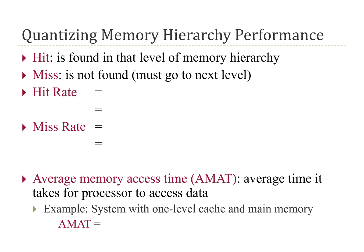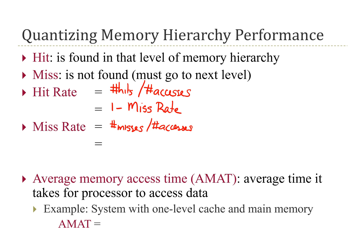We refer to this as the hit rate or the miss rate. The hit rate is the number of hits over the overall number of accesses. You could also calculate it if you knew the miss rate: hit rate = 1 minus the miss rate, because any time you are missing it means you are not hitting. Similarly, the miss rate is the number of misses divided by the number of accesses, or equivalently 1 minus the hit rate.